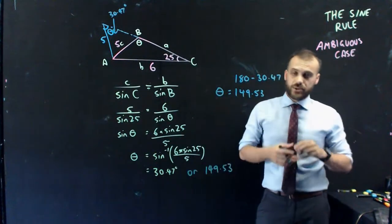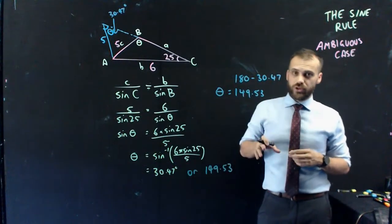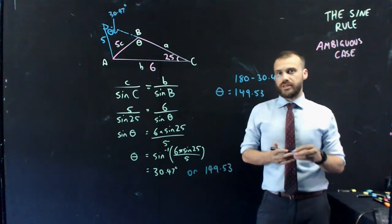This is what we mean by the ambiguous case, because we've described a triangle, but there's actually two triangles that that description fits.